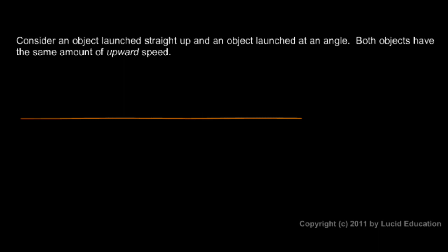Think about an object launched straight up, and at the same time another object launched at an angle. I'll draw the ground here. Let's imagine one object thrown straight up — here's its initial velocity upward, and we'll call that object A. And here's another object thrown at an angle. We'll call that object B.